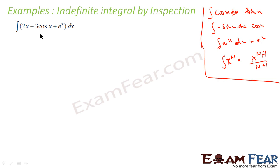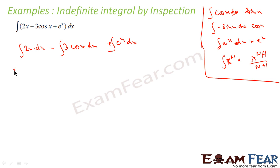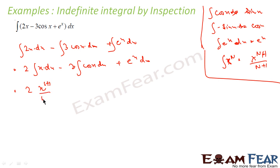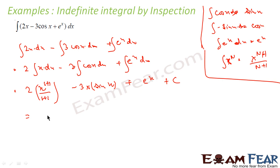Let us solve the integral of (2x − 3cos x + eˣ) dx. Breaking it up: 2 times the integral of x dx, minus 3 times the integral of cos x dx, plus the integral of eˣ dx. Taking constants out: x dx gives x²/2; cos x dx gives sin x; eˣ dx gives eˣ. The answer is x² − 3sin x + eˣ + C.